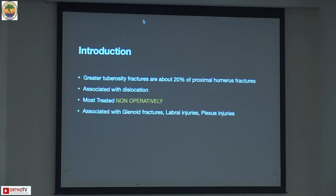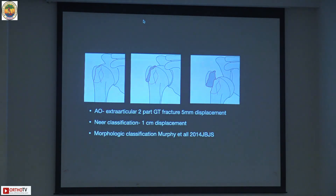GT fractures are associated with glenoid fractures, labral injuries, and plexus injuries, so we have to look for all concomitant injuries. A simple AP x-ray will give us an idea about glenoid fractures. We can do further evaluation with CT scans, MRIs, and neurological examination, but I won't go into details of this because this is a masterclass and not a basic course.